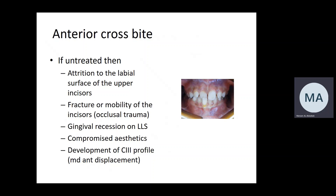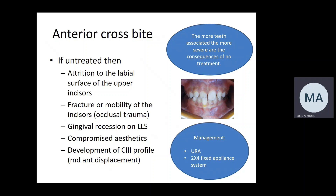For patients with anterior crossbite, if not treated promptly, there will be attrition to the labial surface of the upper incisors, possible fracture or mobility of the incisors because this is a traumatic bite, gingival recession on the lower labial segment, compromised aesthetics, and the patient will develop a Class III profile.